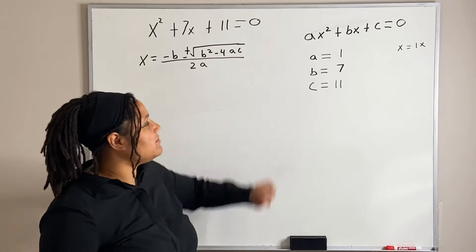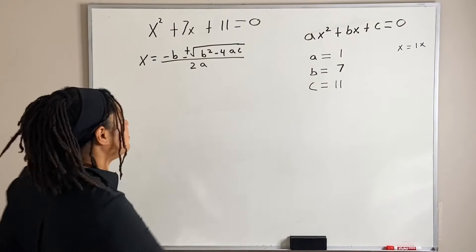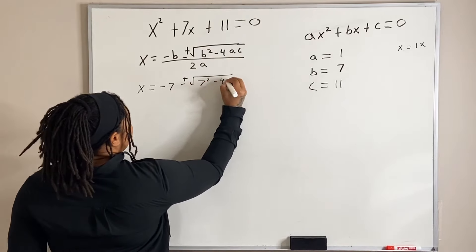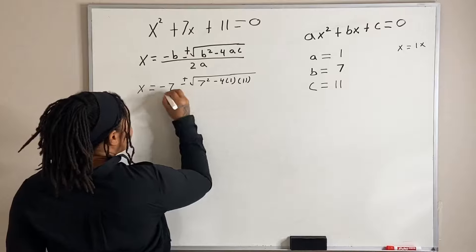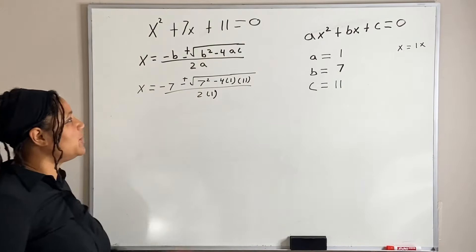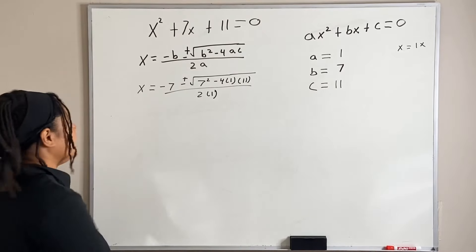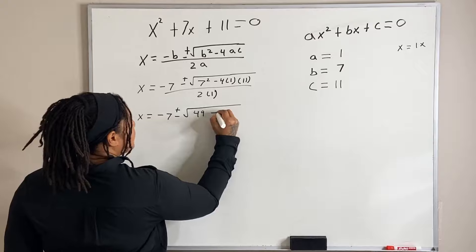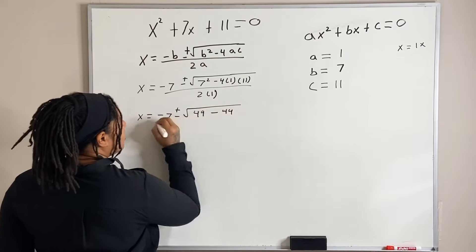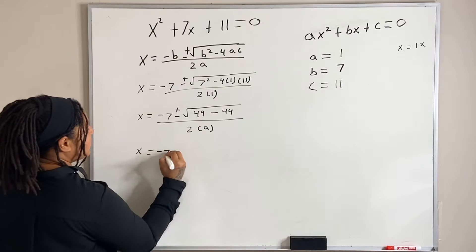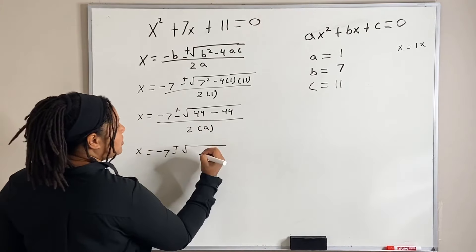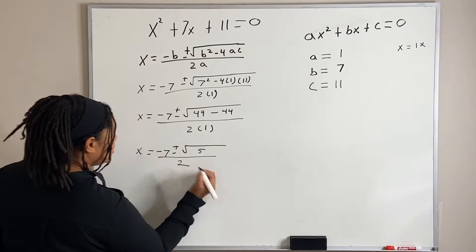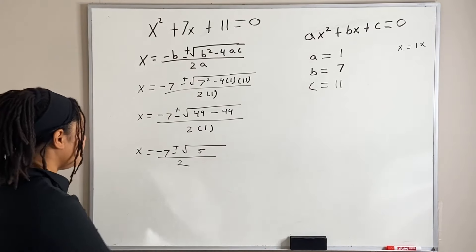Now that we've identified a, b, and c, we plug them into the formula. So we have x equals negative 7, plus or minus the square root of 7 squared minus 4 times 1 times 11, all over 2 times 1. Simplifying: 7 squared is 49, and 4 times 1 times 11 is 44. So we get x equals negative 7, plus or minus the square root of 49 minus 44, which is 5, all over 2.